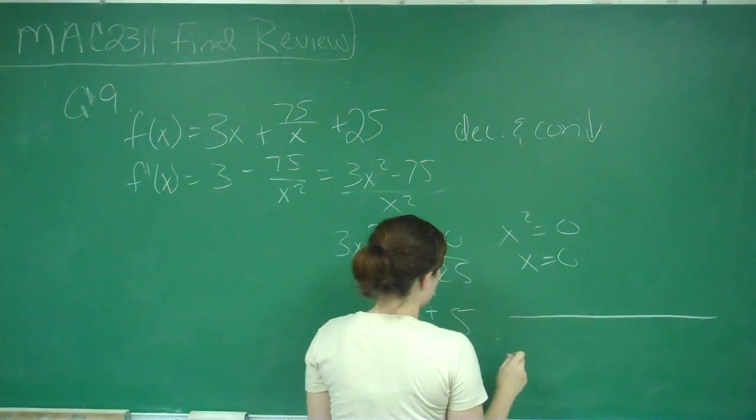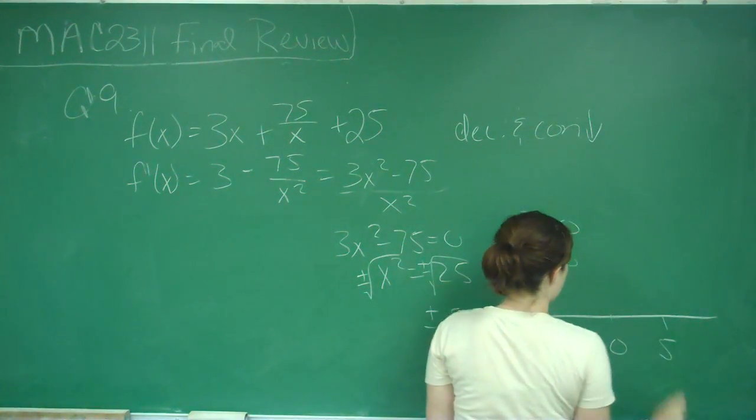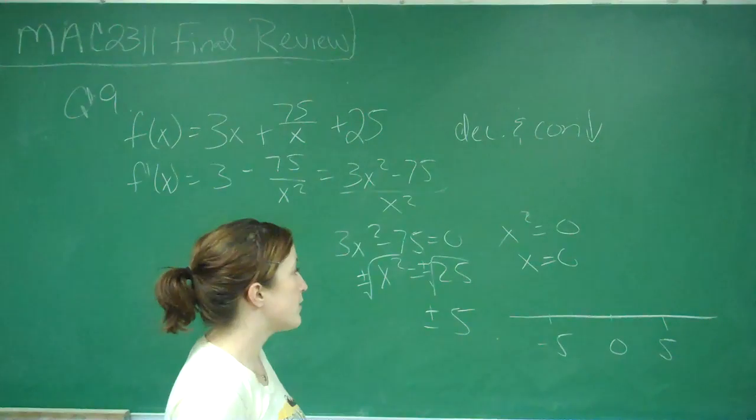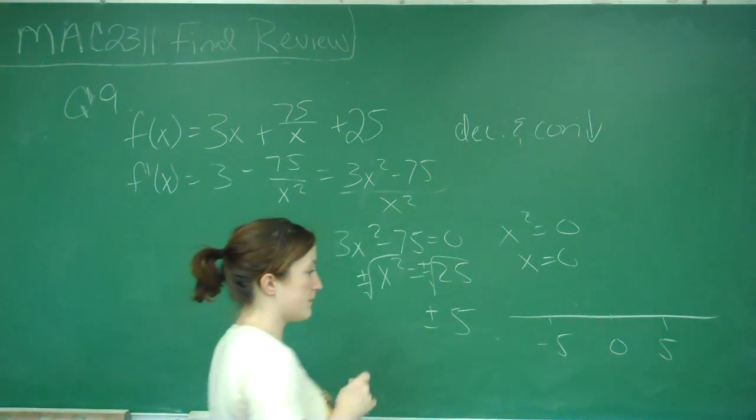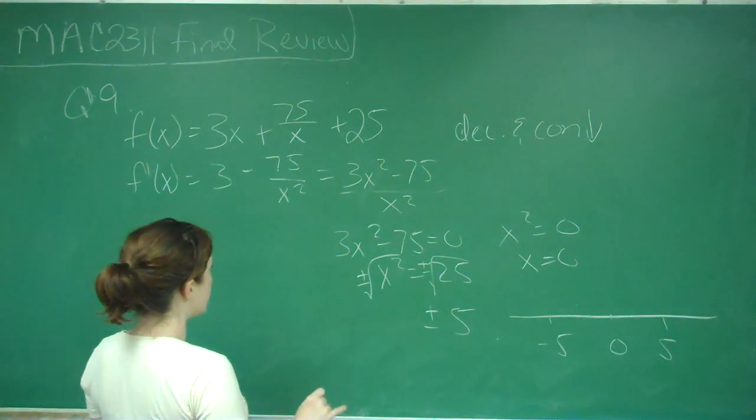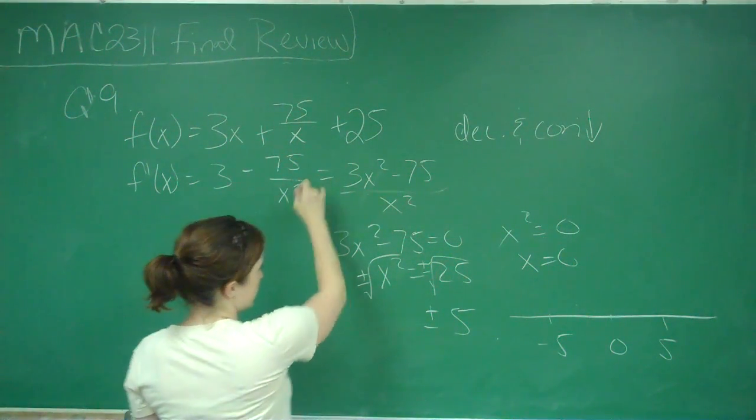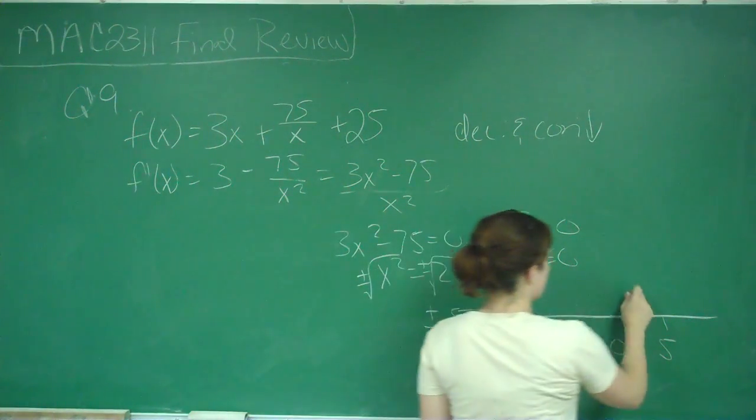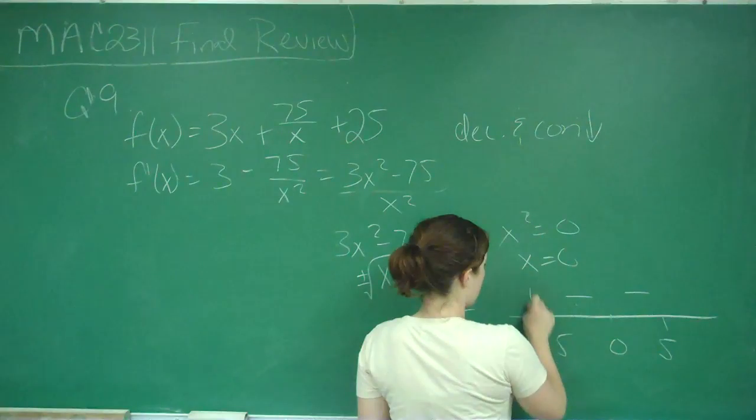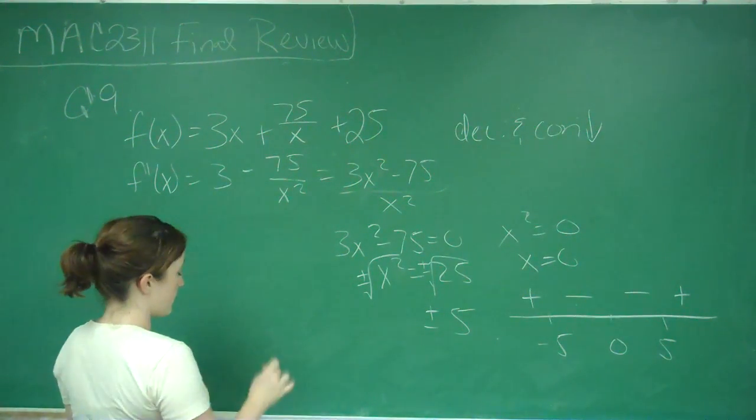So when I have that on my number line, I've got negative 5, 0, and 5. I know that my value should not change on either side of 0, and that it should on the 5s. So when I plug in 1 into my first derivative, I get 3 minus 75, which is a negative, over 1. So I get negative here, a negative here, positive here, using multiplicities. So this is for my first derivative.